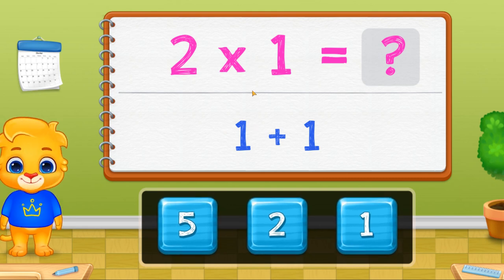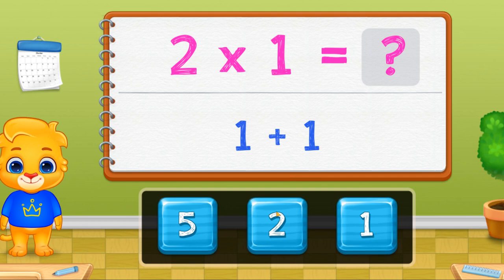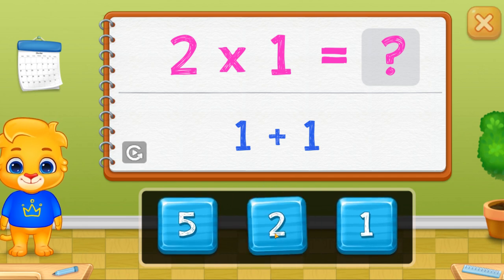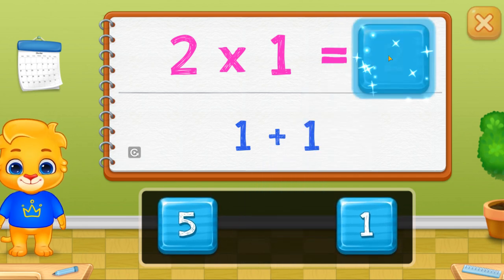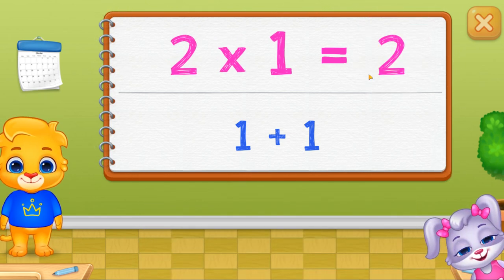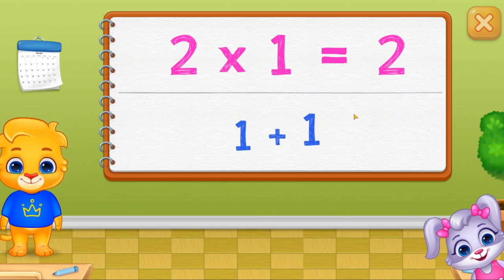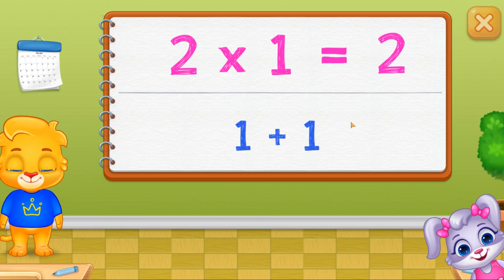If you can add numbers, you can multiply them. Two times one is the same as adding one two times. Two times one is just like one plus one equals two.